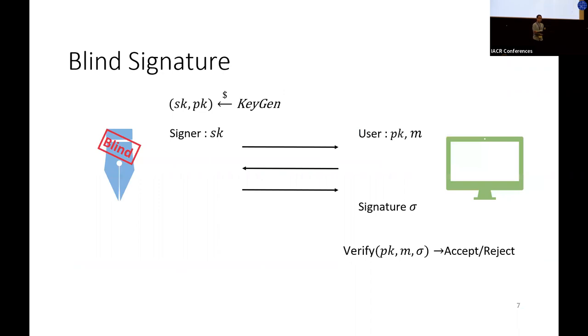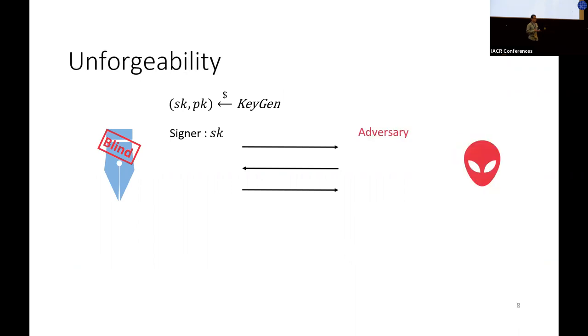So I've now come to the technical part of the talk. For security definitions, I will not define blindness formally. We rely on an intuitive understanding. In this talk, I will mostly discuss how to achieve unforgeability. However, unlike unforgeability for the normal signature scheme, we should define as the adversary cannot forge a signature that has not been issued by the signer.